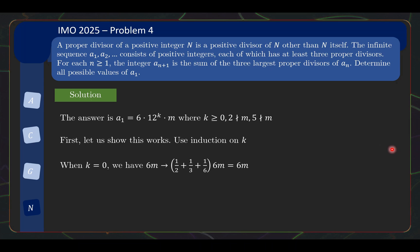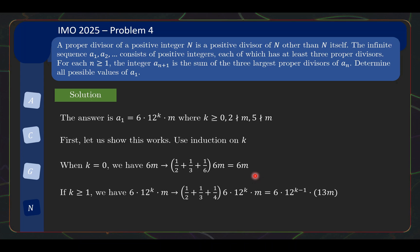When k = 0, you basically have 6m, and the 3 smallest divisors are 2, 3, then 4 is not a divisor, 5 is not a divisor, and 6. So you get (1/2 + 1/3 + 1/6)·6m = 6m back itself, so the sequence goes on and on. Whereas if k ≥ 1 you have 12 in there, so 2, 3, and 4 are all divisors. You get 13/12 of the original number, so 13 appears and you lose one power of 12, which lets you do the induction step.